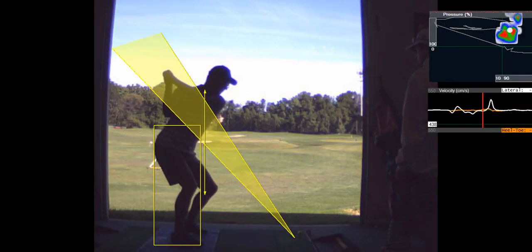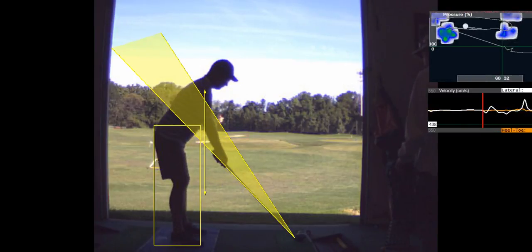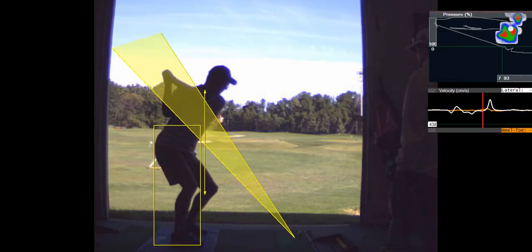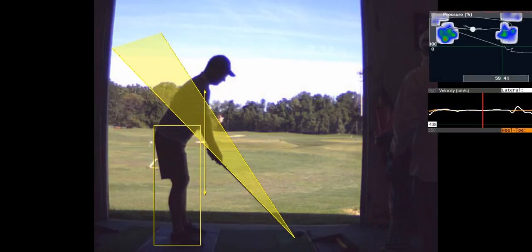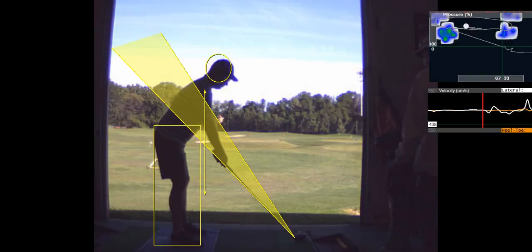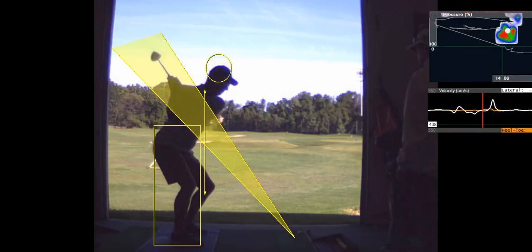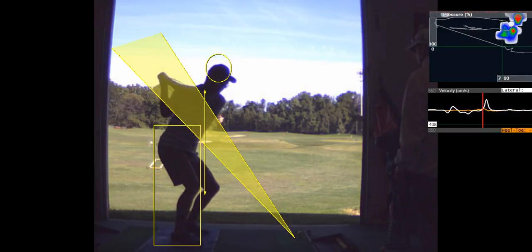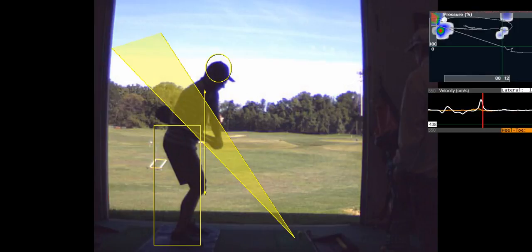You got a lot of knee flex on the backswing. Your pelvis sort of drops underneath you. Do you have a back issue? Coming down, the club gets a little underneath the plane there.